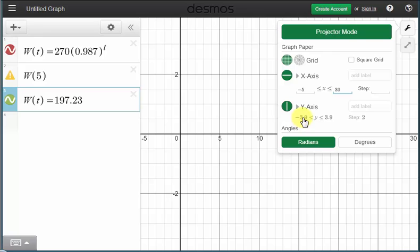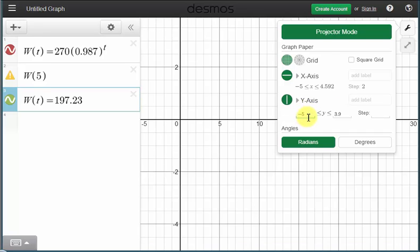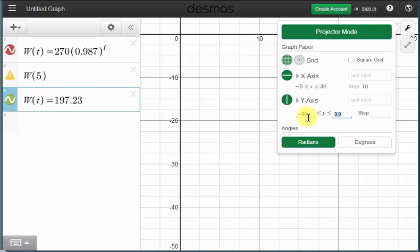And now for the vertical axis, we know the starting weight was 270 pounds, which means the vertical axis should go past this value to, let's say, 300. So let's make the vertical axis and y-axis go from, let's say, negative 50 to 300.